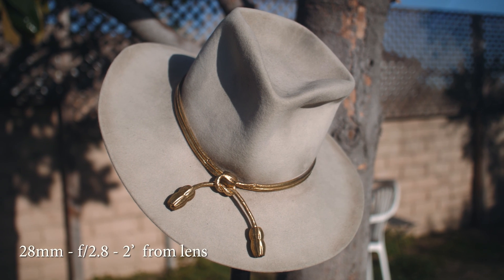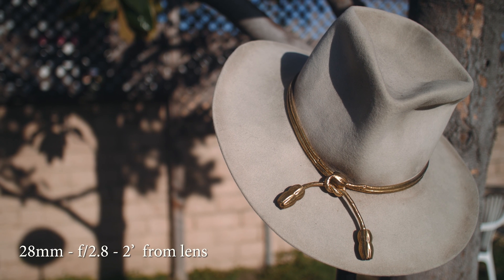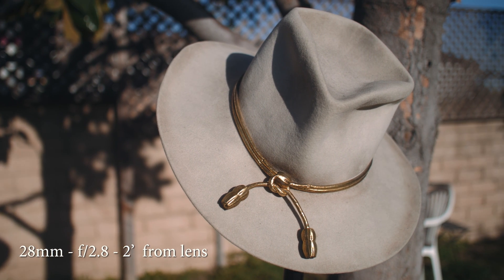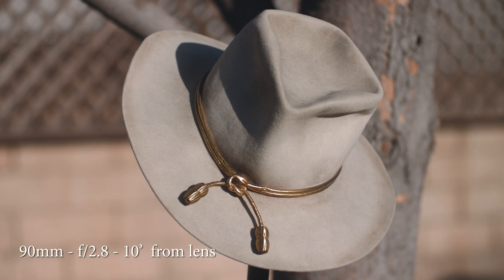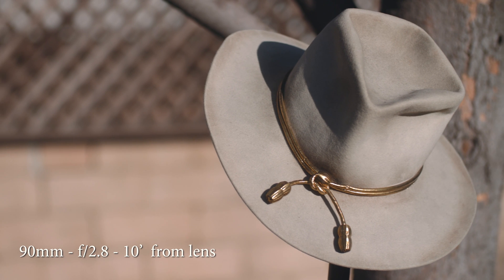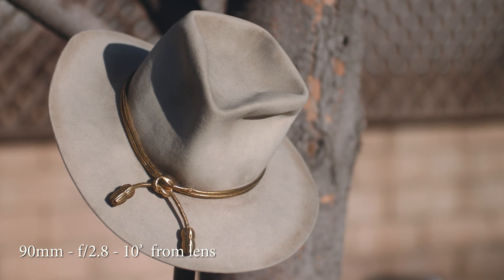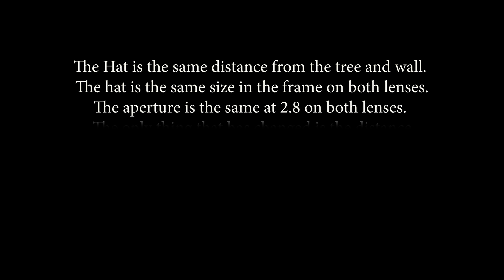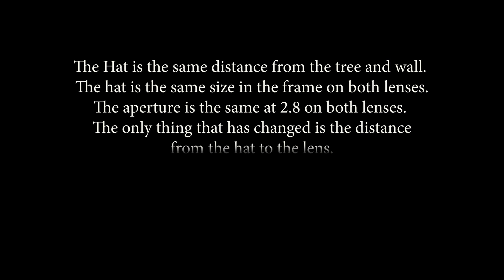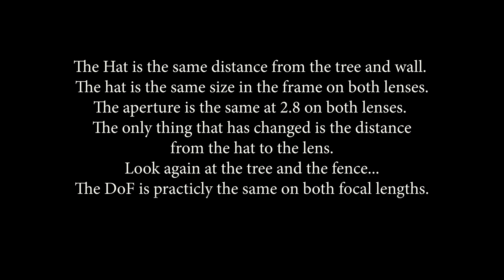This is a really simple test. I've got a 28 millimeter lens here, and here's the 90 millimeter lens also at f/2.8 and about the same frame size — which is the only way to do a fair comparison on focal length and depth of field. The hat is the same distance from the tree and the wall, the same size in the frame on both lenses, and the aperture is the same on both lenses at 2.8. The only thing that's different is the distance from the hat to the lens.